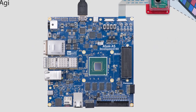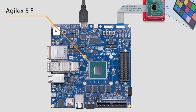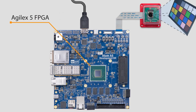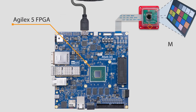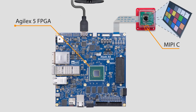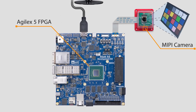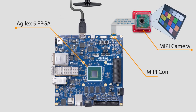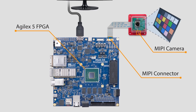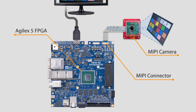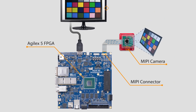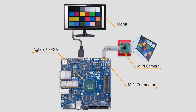This demo showcases how to leverage the built-in MIPI PHY within the Agilex 5 FPGA to capture images from a MIPI camera and perform image processing using the FPGA, ultimately displaying the images on an HDMI monitor.